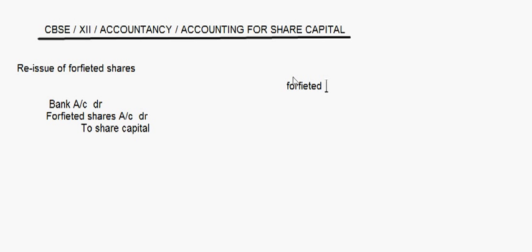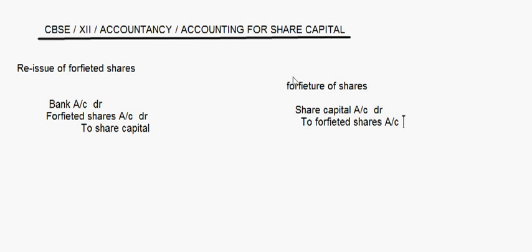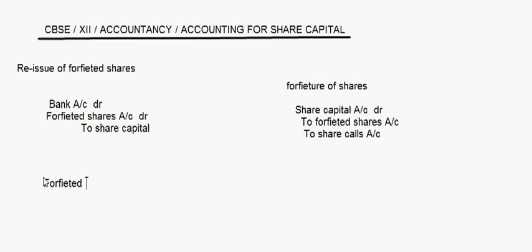Now whatever is the difference — the balance remaining — see, in the forfeiture entry the journal was: Share Capital Account debit, to Forfeited Shares Account, to Share Allotment, to Share Call. So the Forfeited Shares Account was credited there, whereas here in reissue it is debited. Whatever is the remaining balance in that account, after deducting the discount, will be transferred to the Capital Reserve Account. So the next entry is: Forfeited Shares Account debit, to Capital Reserve Account.